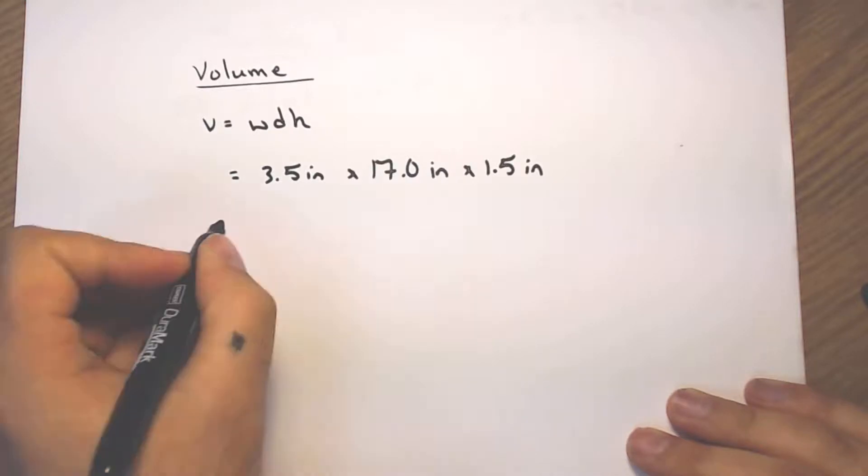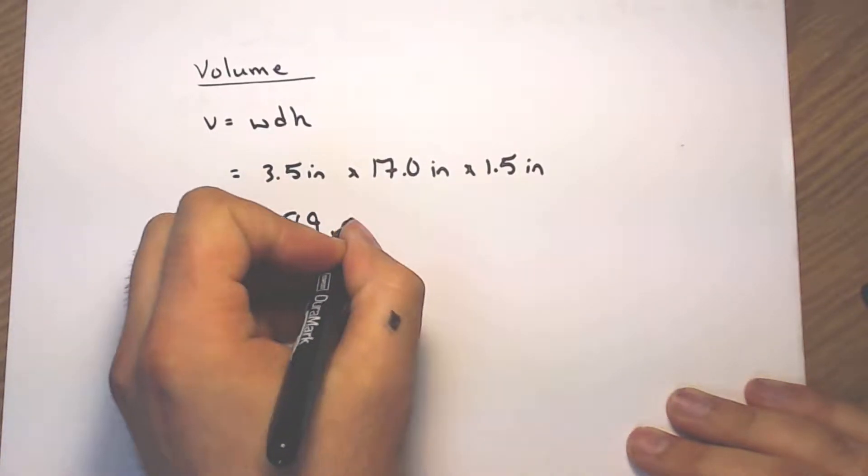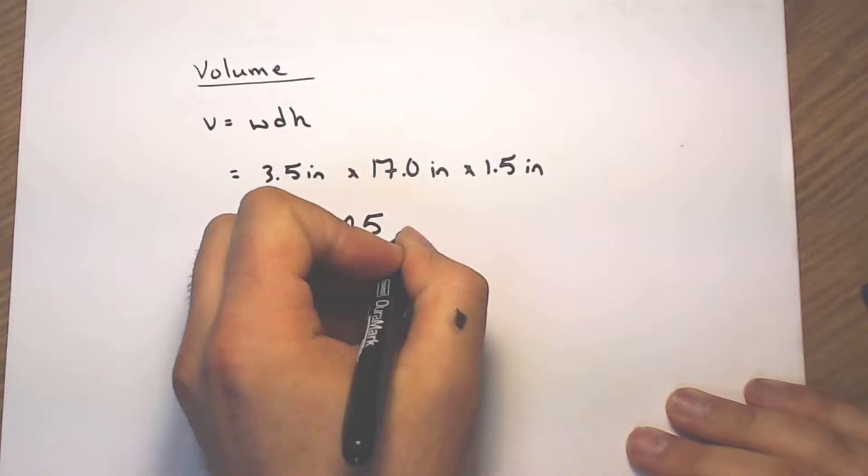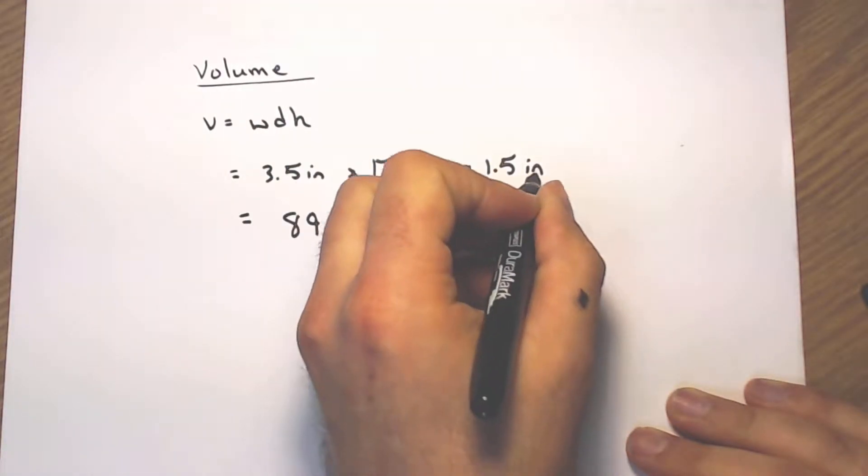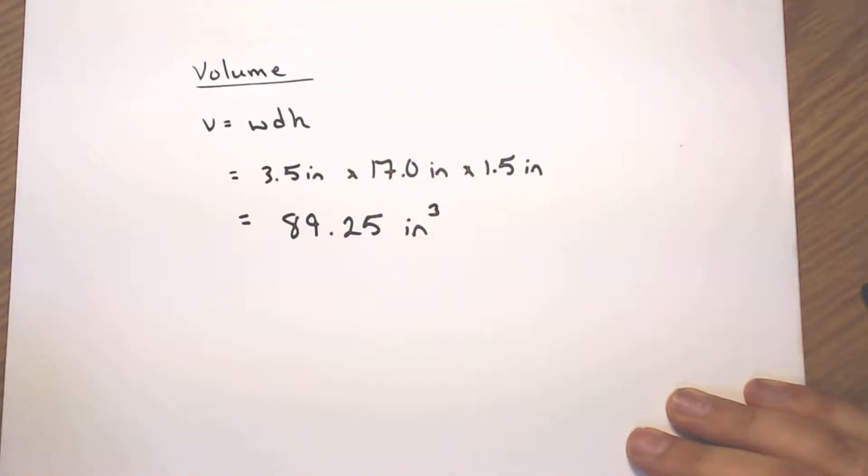Putting all of that into the calculator, you end up with 89.25. And since we have inch times inch times inch, it's now inch cubed.